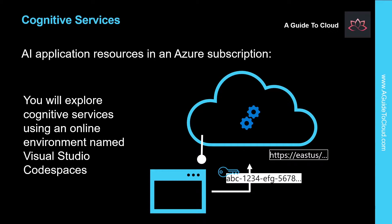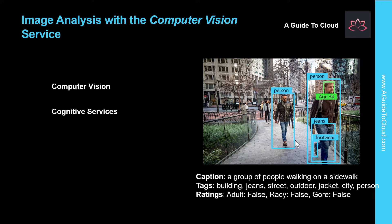A general cognitive services resource enables you to combine all of your AI services in a single Azure resource for centralized management. Regardless of the type of resource you use, a client application will consume the service it provides by connecting to REST endpoints using a resource-specific key for authentication.